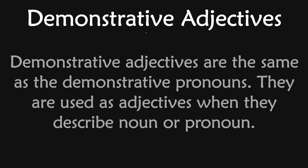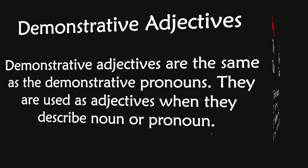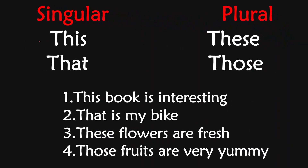Let's learn the next one — demonstrative adjectives. Earlier in the session, while learning pronoun and types of pronoun, I taught you what the demonstrative words are. Demonstrative adjectives are the same as the demonstrative pronouns; they are used as adjectives when they describe a noun or pronoun. In the singular form, you can use this and that to show things which are nearby or in front of you. In the plural form, the plural of this is these and the plural of that is those. For example: this book is interesting — this is the demonstrative adjective. That is my bike — that is the demonstrative adjective.